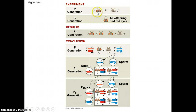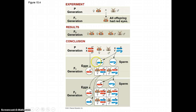He took his red-eyed and his white-eyed fruit flies, mated them, and they all had red eyes in the F1 generation. Then in the F2, this is what he saw. If you watch the genes, this is what happened as you look at the combinations, or the way the chromosomes recombine to create the F2 generation.